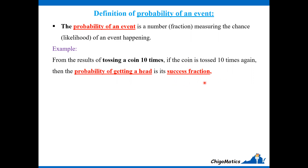We use the success fraction from the first experiment to predict what would happen if we carry out the experiment again. That success fraction gives us the probability of getting the event — in this case, a head. So the number of heads we got in the first experiment over the number of tosses, which was 7 over 10, becomes the probability of getting a head if we repeat the experiment.